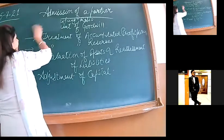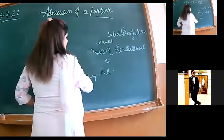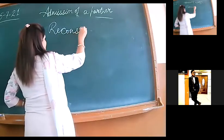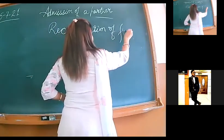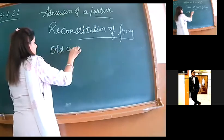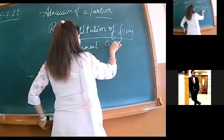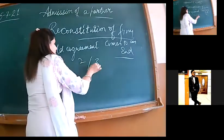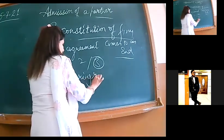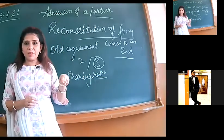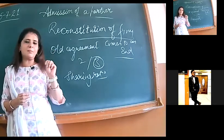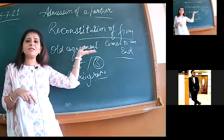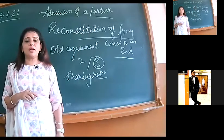So firstly, we will be covering these four topics. Whenever admission, retirement or death occurs, it is a case of reconstitution of firm. What is the meaning of reconstitution of firm? Re-constitution of firm means the old agreement between or among the partners comes to an end. Two partners have admitted a new partner. He has also made a partner in his firm. Now we have three partners.